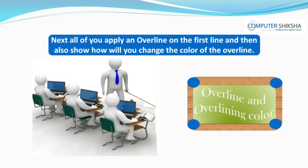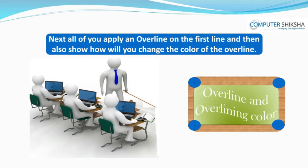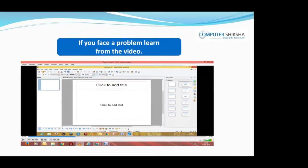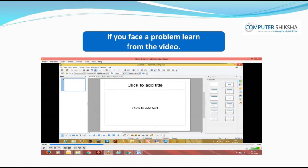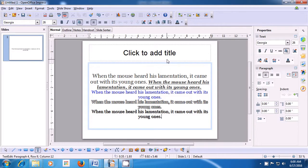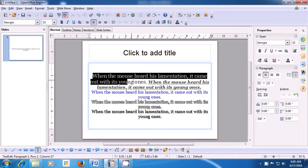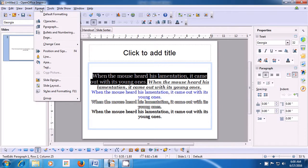Next, apply an overline on the first line and also show how you will change the color of the overline. If you face a problem, learn from the video. Let us now practice the use of overlining. To overline a particular line, first select that line. With overlining, you get a line on top of the selected text. Once selected, take your pointer to the Format menu, left-click, and click on the Character submenu.